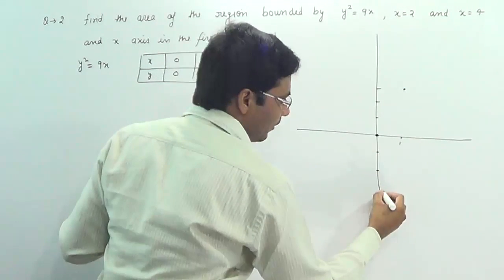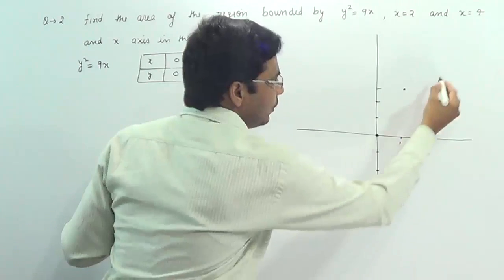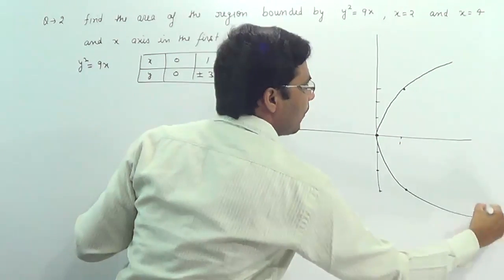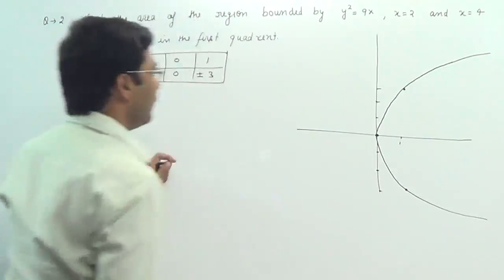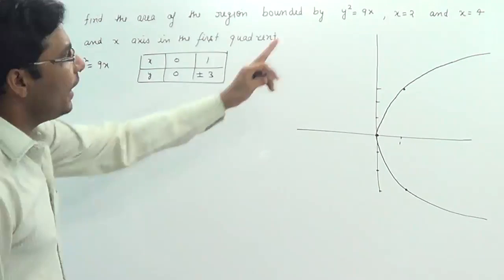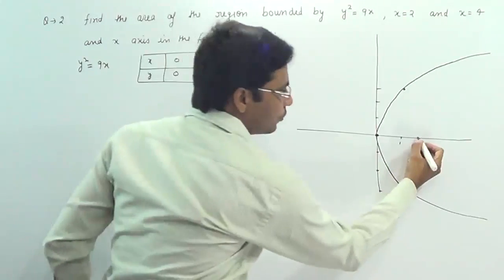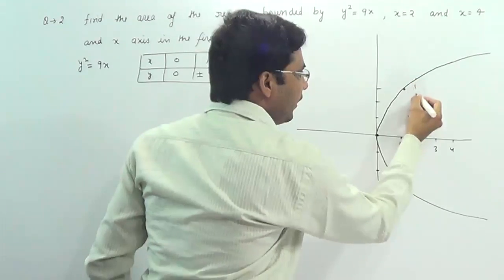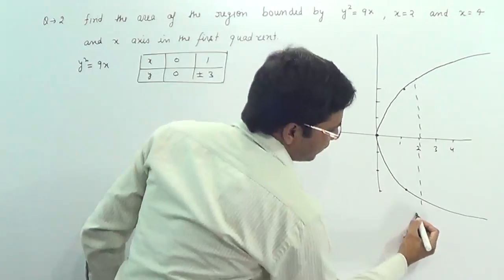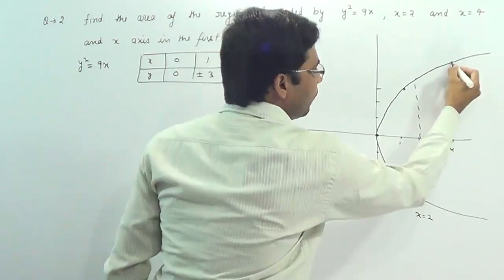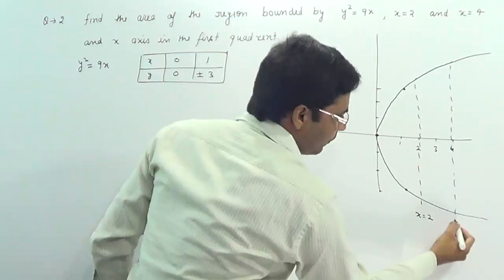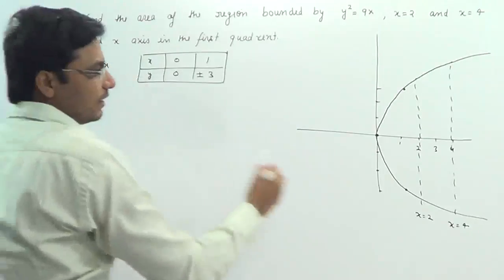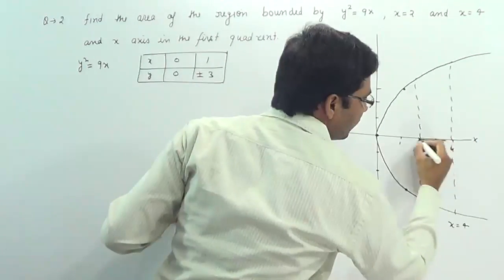So this type of parabola will form from these points. After that, x = 2, so we draw a line at x = 2, and x = 4, this is x = 4, along with the x-axis.